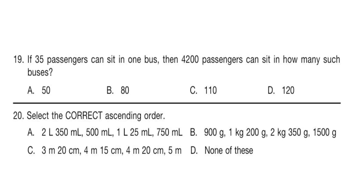Question 19: If 35 passengers can sit in one bus, then 4,200 passengers can sit in how many such buses? Here, divide 4,200 by 35. The correct answer is option D, which is 120.